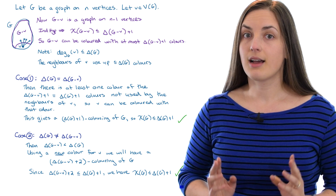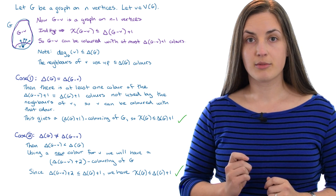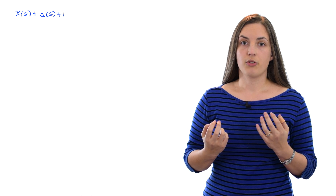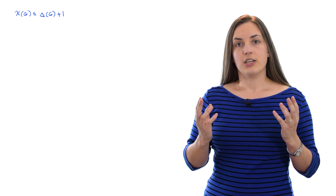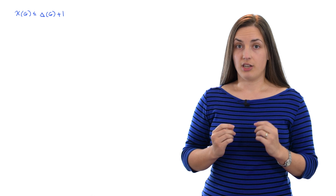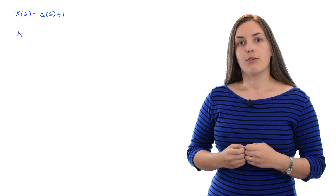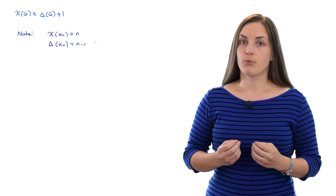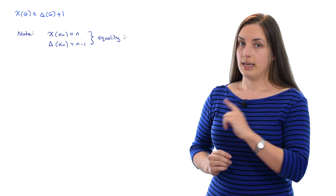We've now shown that every graph can be colored using at most the maximum degree plus one colors. At the beginning of the video I remarked that sometimes the chromatic number of the graph is very far away from this bound. However, we cannot state this bound as any less in general, because there are graphs which achieve equality in this bound. For example, if we take the complete graph on n vertices, it has chromatic number n but also has max degree n minus one, so it achieves equality in this bound.